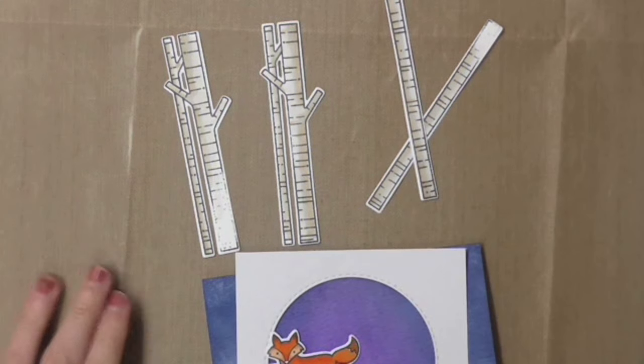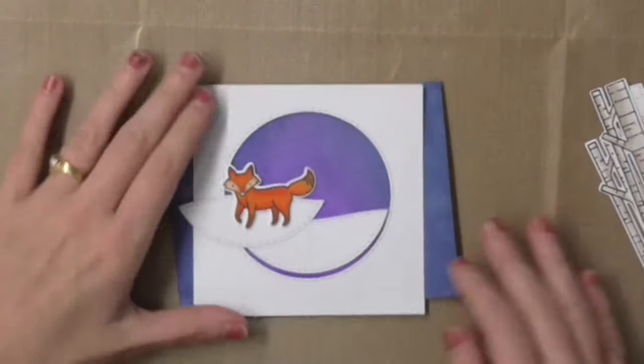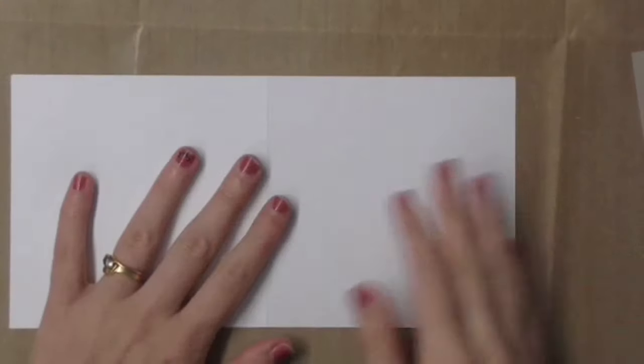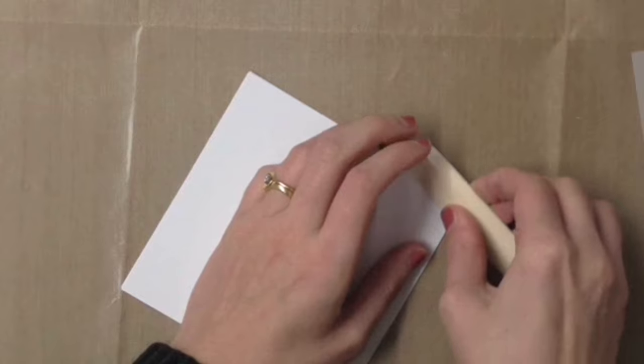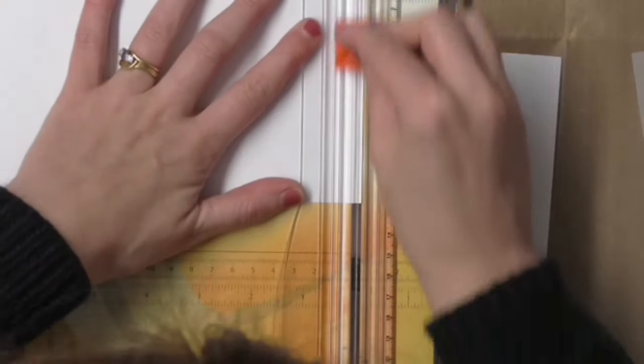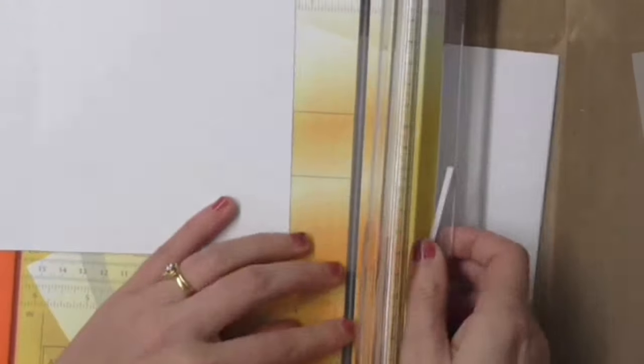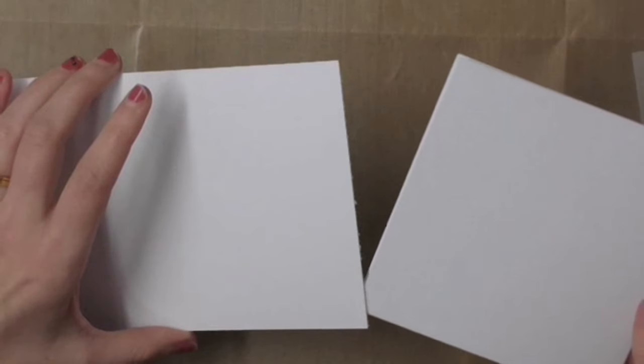Okay so now I have my fox, my trees, the snowy banks and I'm going to now move on to creating the base of the card. I'm using a card blank, this is a square card blank.